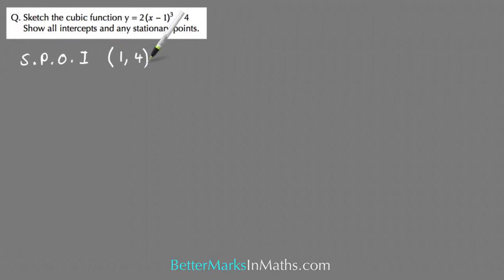From there you need to get the y-intercept by letting x equals 0. You end up with y equals 2 bracket minus 1 cubed plus 4, and that's equal to 2 times minus 1 plus 4.